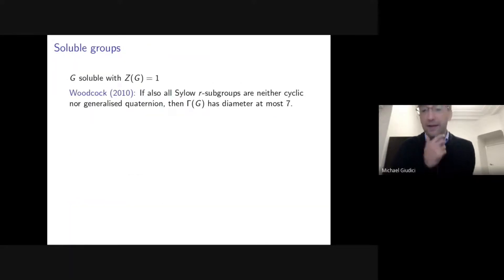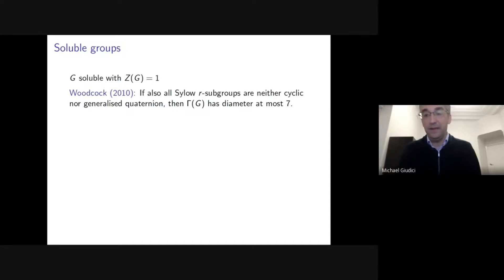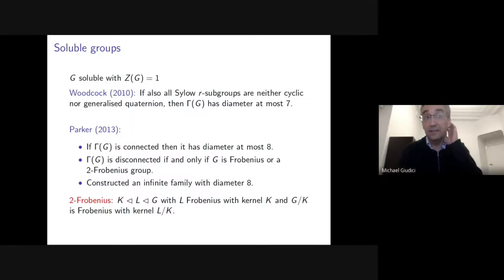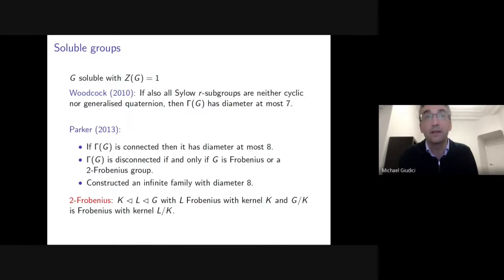There was also work by Woodcock in a 2010 thesis showing that for soluble groups with trivial center where all subgroups are either cyclic or generalized quaternion, the commuting graph has diameter at most 7. Then Chris Parker in 2013 studied arbitrary soluble groups with trivial center, showed that if connected the diameter is at most 8, determined exactly when the commuting graph is disconnected — only for Frobenius or two-Frobenius groups — and constructed an infinite family achieving diameter 8.